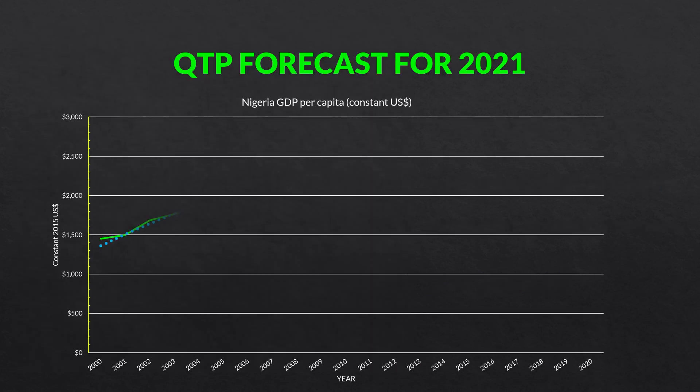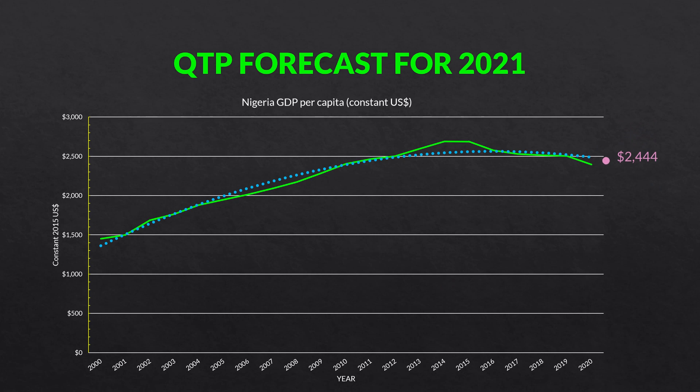If we go ahead and graph all of that, we have our original data on the green line, our quadratic trend projection in the blue dotted line, and our forecasted value of $2,444 in the pink. As you can see, if you extend the quadratic trend projection outward, it would end up right where that pink dot is.